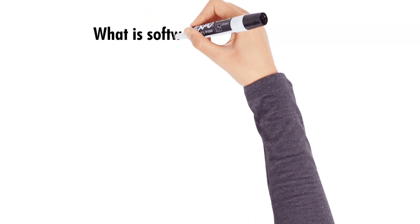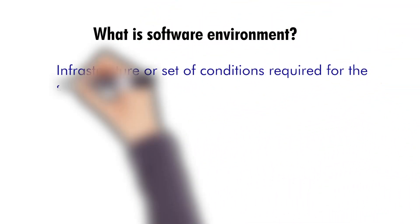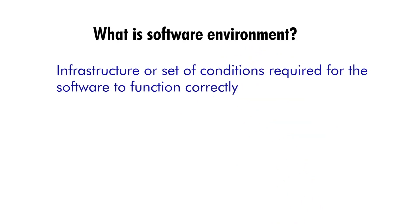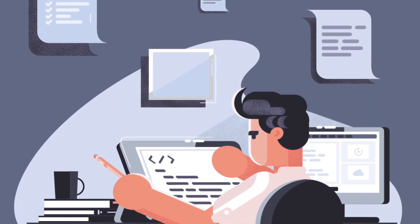What is software environment? The environment of a software refers to the infrastructure or set of conditions required for the software to function correctly. It includes the hardware, software, and network configuration that the software needs to operate correctly. The software environment is important because it can affect the software's performance, stability, and security.